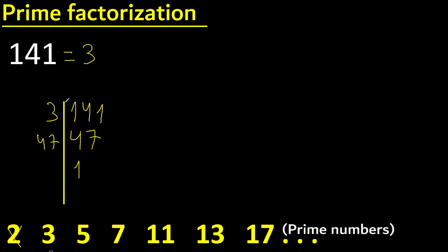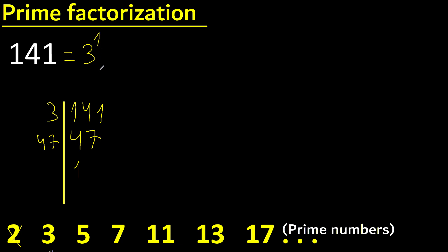3 to the exponent 1, exponent is 1, therefore equals the same number. Next, 47 one time. Prime factorization complete.